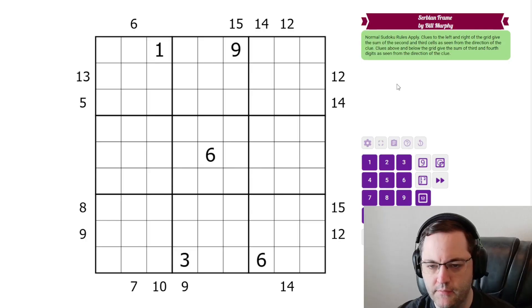So Bill hasn't given us any of the extreme sums here. A lot of times when we have two cell sums, we're looking for three, which has to be one, two, or 16 has to be seven, nine. None of these sums are that extreme, but we can narrow down some of them because of the given digits.